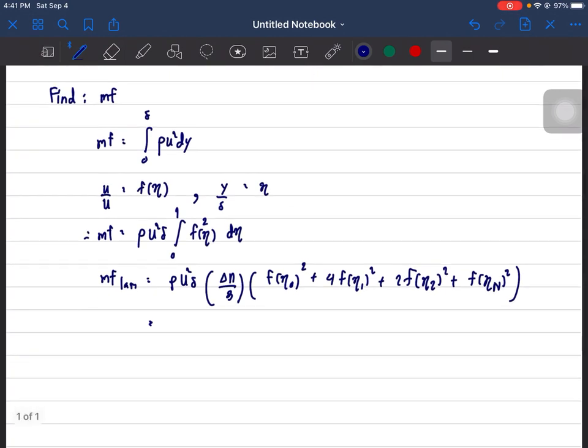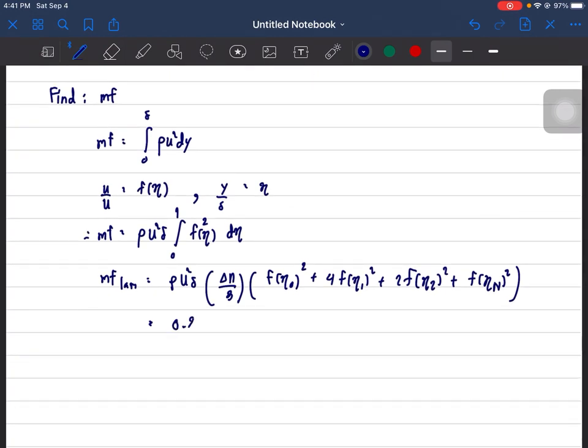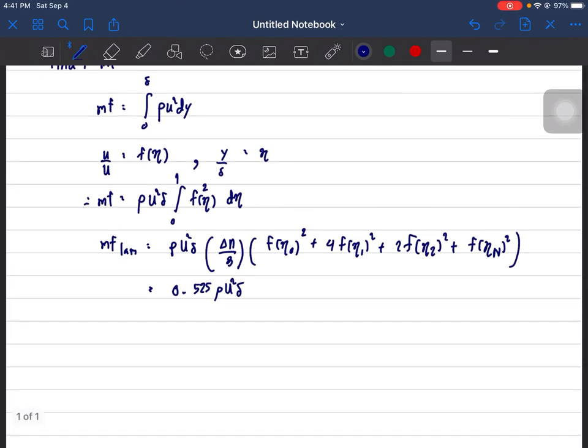So that results in the laminar profile for the Blasius being 0.255 rho u square del. And for one-seventh power velocity profile for the Blasius solution, and for one-seventh power...